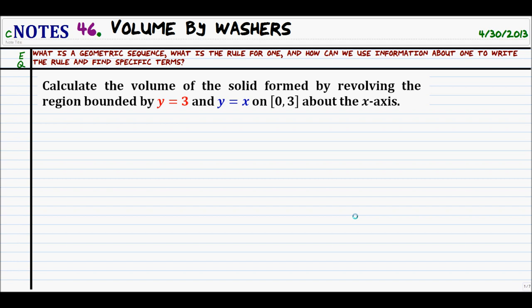Today we're going to extend it by looking at objects that don't have a perfectly clean situation. We're going to have problems because we'll have 3D regions that actually have holes and cavities in them. What are we going to do when those cavities appear? The method we're going to use is called volume by washers.